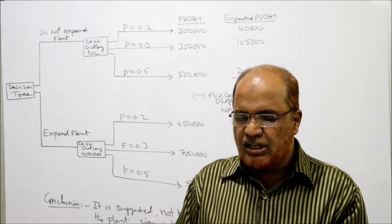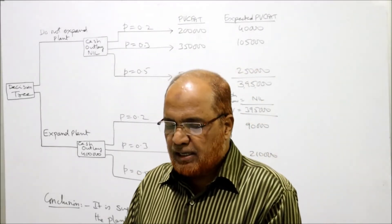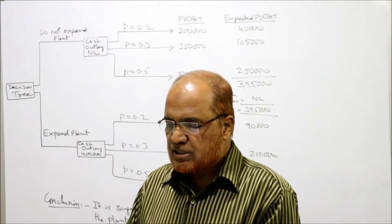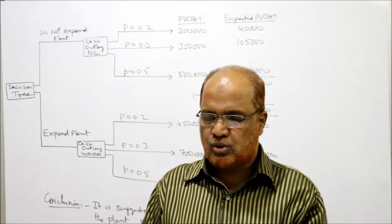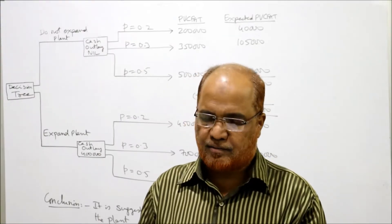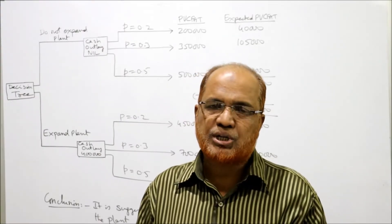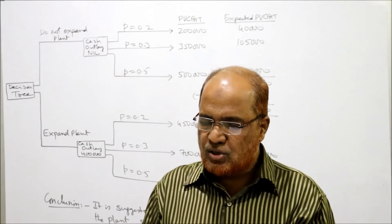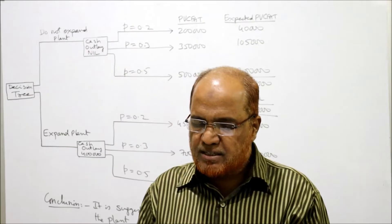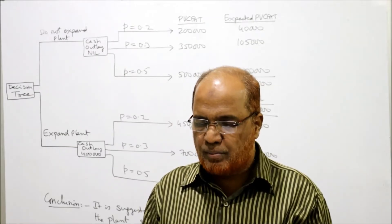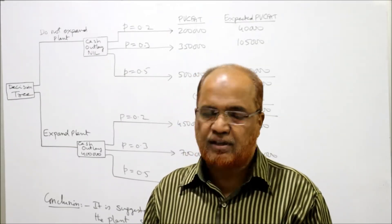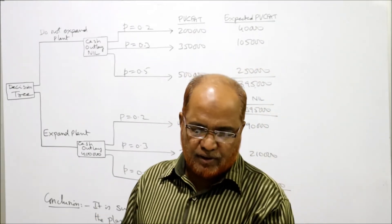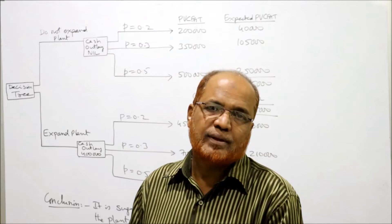Problem number 36: a project involves an initial investment of ₹25,000. The life of the project is 4 years and the cash inflows are ₹12,000 per annum for 4 years — constant at ₹12,000 each year. Cost of capital is 12%. The expected rate at which cash inflows will be reinvested is also given. This introduces another technique of capital budgeting: the terminal value method.